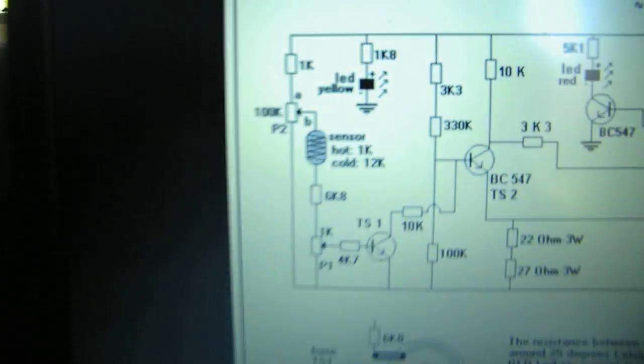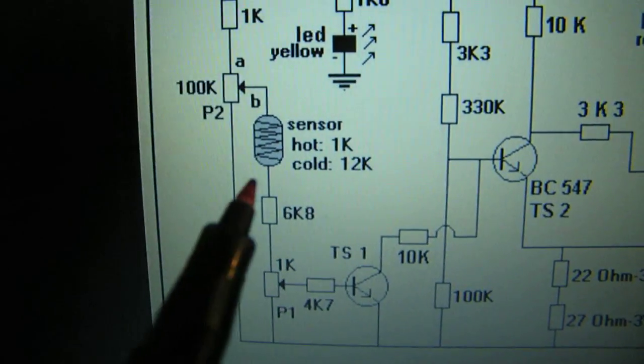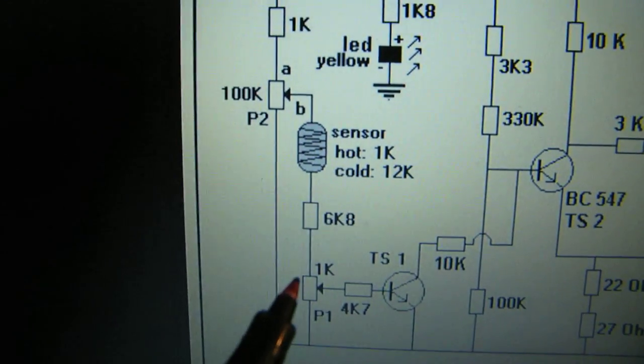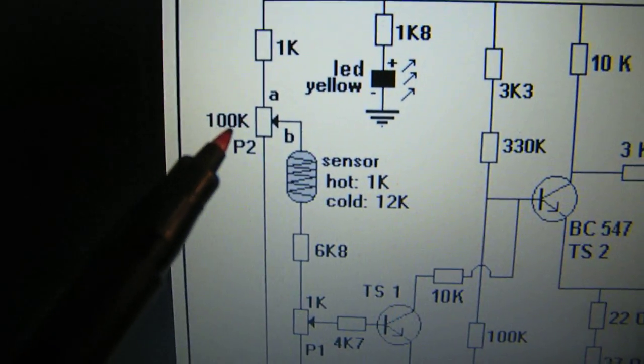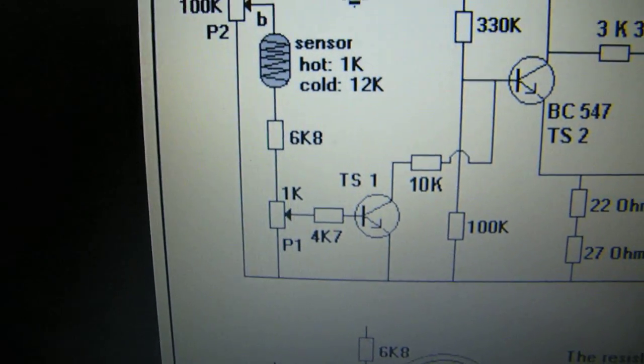You can also use other sensors with other resistance values and align them with the help of this potentiometer and this potentiometer.